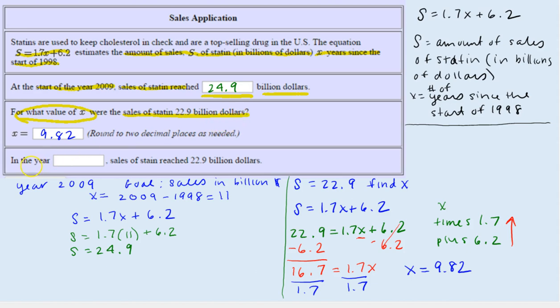The next question asks us to determine in what year that happens. So it's nice that it's 9.82 after the start, but it would be nice to know the actual year. If we start at 1998 and add 9.82 years, we would be at 2007.82.